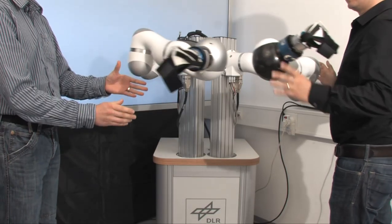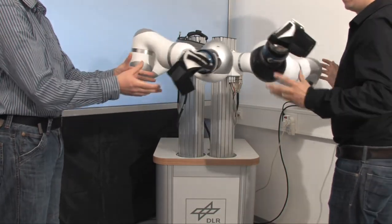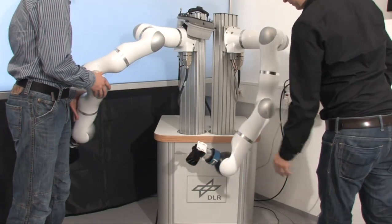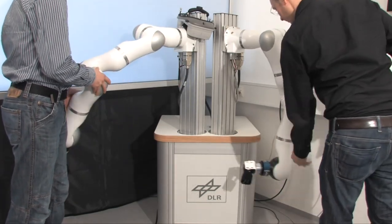The DLR bimanual haptic device is equipped with several safety features. A collision avoidance module prevents collisions between the two robots as well as with the table.